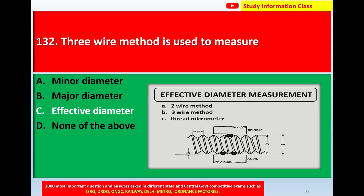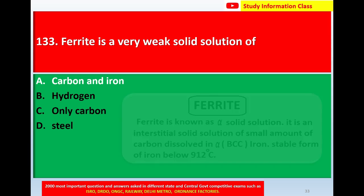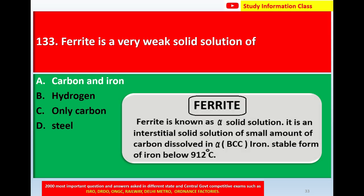Question number 133: Ferrite is a very weak solid solution of a small amount of carbon dissolved in alpha BCC iron, stable form of iron below 912 degrees Celsius. The correct answer is option A: carbon and iron.